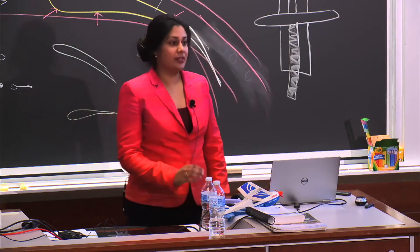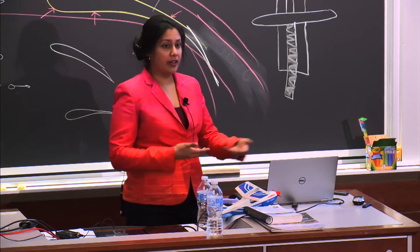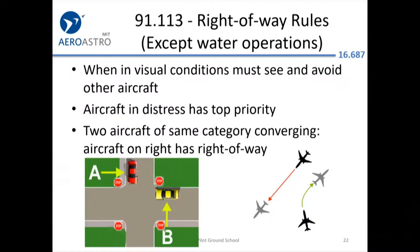The right of way rules are described in FAR 91.113. The order of operations: anyone in distress or with an emergency gets priority over everybody else. Balloons can't really move much — even if you wanted to assert right of way, they're not going to be able to move. Unpowered aircraft get priority. For multiple aircraft of the same class — two powered airplanes converging — the aircraft on the right has the right of way.